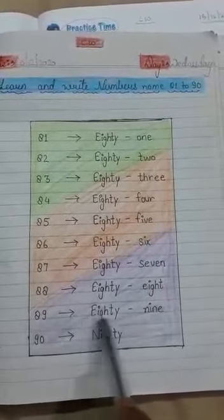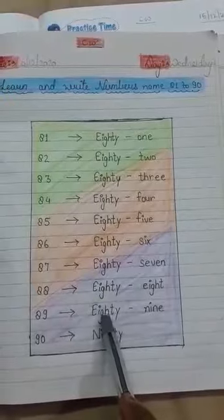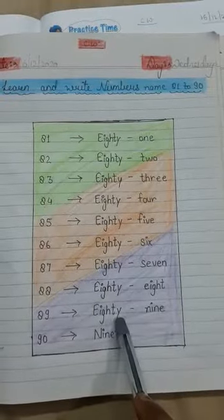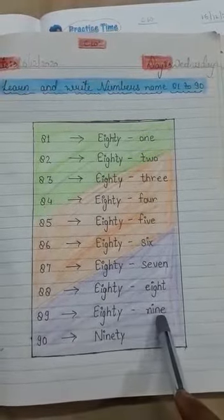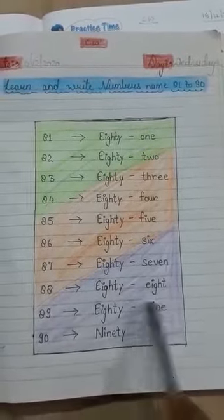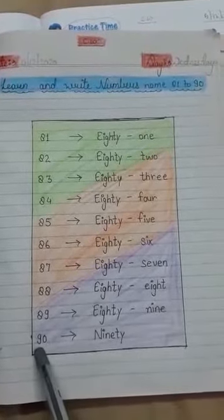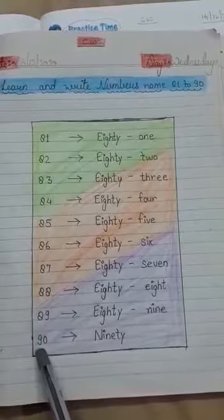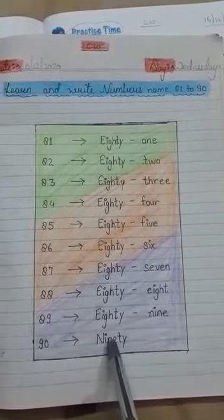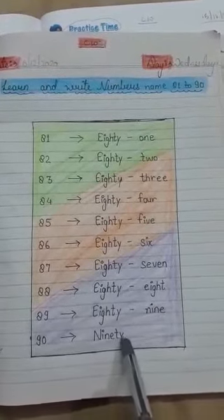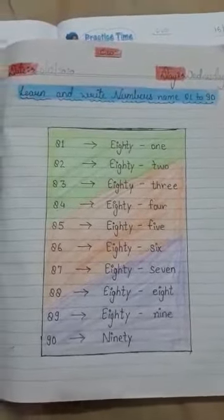89. Eighty 80, nine 9, 89. 90. Eighty 80, nine 90.